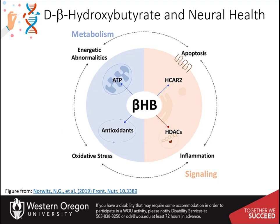Beta-hydroxybutyrate is also gaining attention in neuronal health and may provide a new treatment avenue for disease states such as Parkinson's disease. Lifestyle interventions that induce endogenous D-beta-hydroxybutyrate production, such as caloric restriction and ketogenic diets, can increase health span and lifespan in animal models and potentially reduce the risk of age-related neurodegenerative diseases such as Alzheimer's and Parkinson's disease. Beta-hydroxybutyrate has been shown to help reduce the death of dopaminergic neurons and alleviate symptoms in mouse models.